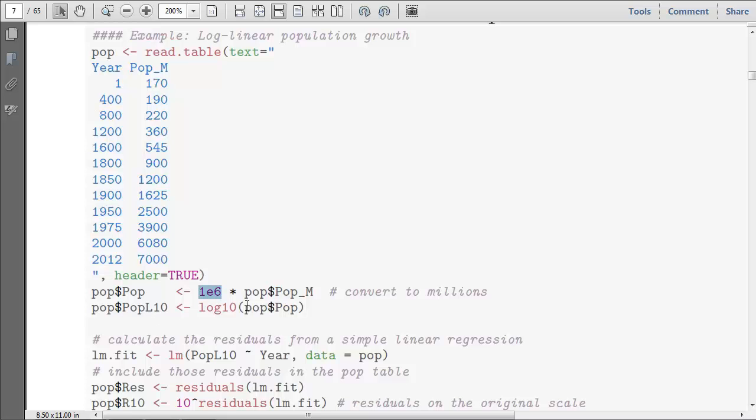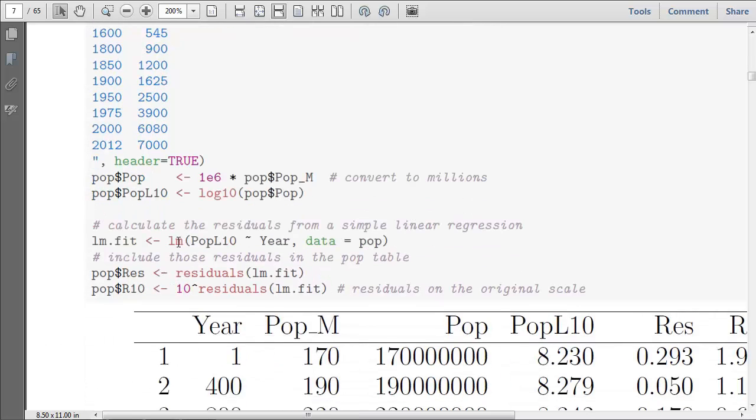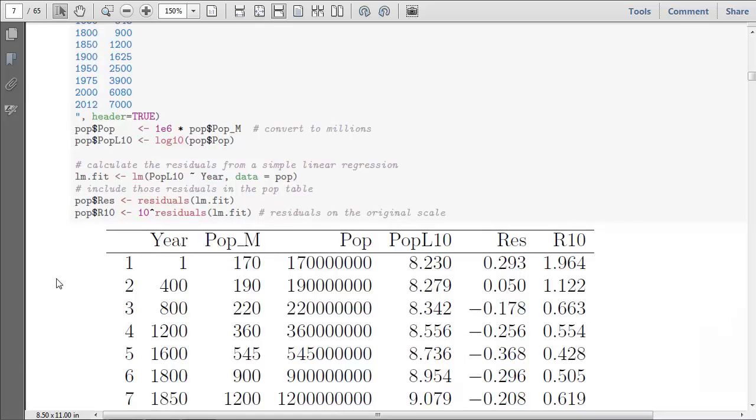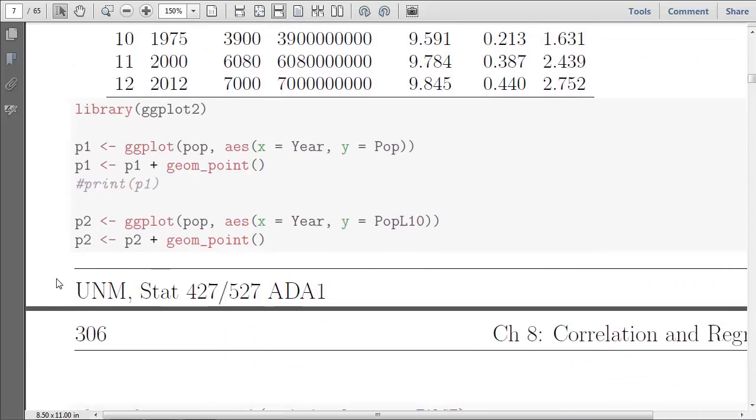And then, using that actual number, I'm going to log 10 that number. So we'll look at the logarithm of the population over time. We're going to look at this function a lot more in this chapter, lm, which is to fit a linear model, a simple linear regression, where the logarithm of the population is the y variable and the x variable is the year. So how does the population, the log population depend on year? And I have some other details here that I'm going to skip over right now.